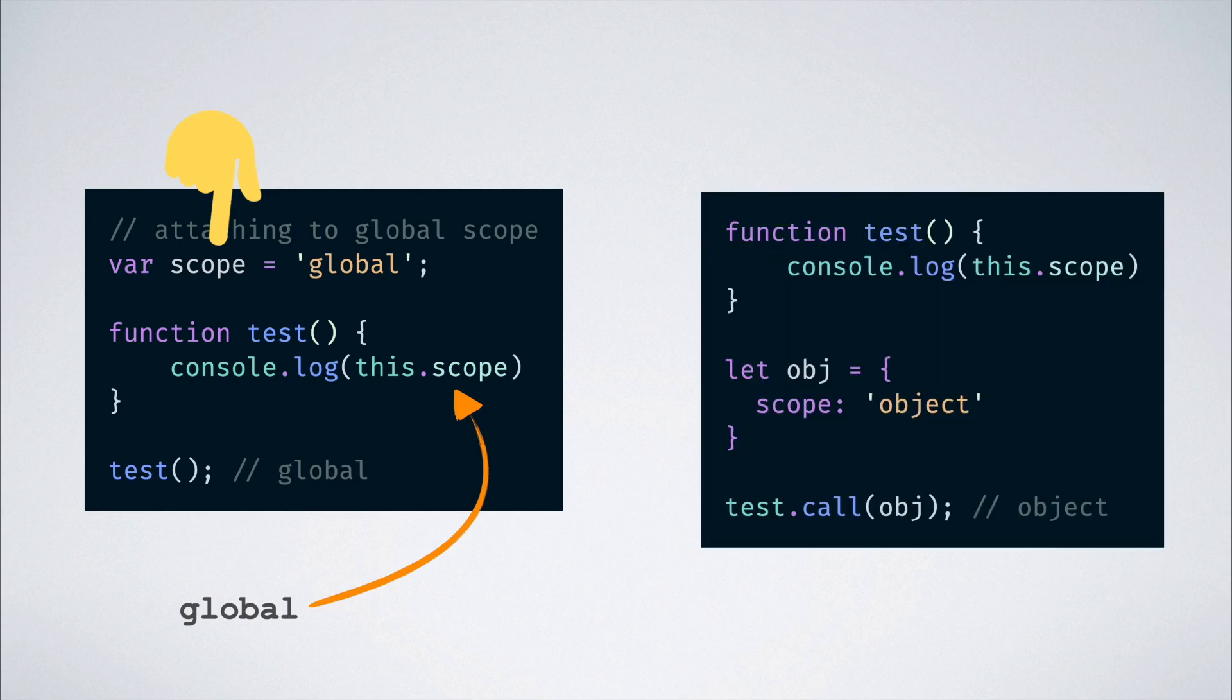But JavaScript provides us with certain binding mechanisms like call, bind and apply using which we can change the this binding of a function. In this edited example, if we create an object with a scope variable inside of it, we can force the test function to be executed with the object as its this binding by using the call method. When we do that, the value of the scope key on the object is printed instead of the value of the scope in the global context.